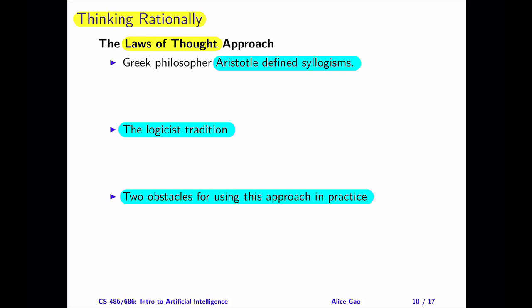To recap, the third definition of AI, laws of thought, aims to develop a system that thinks rationally. This definition uses rationality as the benchmark and aims to model thoughts rather than behavior.